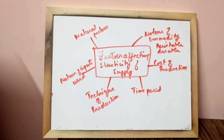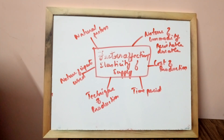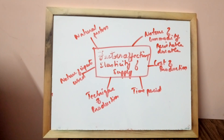What do you mean by nature of commodity? The commodity is classified as perishable and durable. Durable goods, which can be stored for a long time like furniture and TV, have elastic supply because they can be stored and their supply can be changed according to changes in their prices.